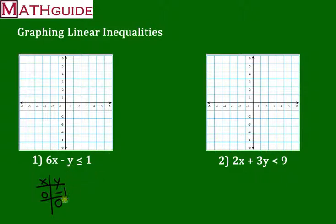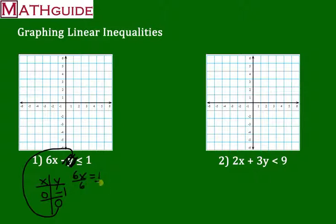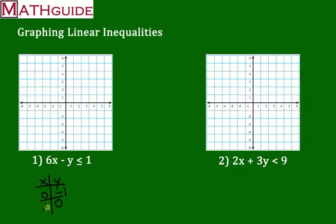Now let's do the same thing but put in zero for y. Picture putting in zero there — six x minus nothing is just six x, so that term disappears. We're left with six x equals one. I'm just ignoring the inequality right now; I want to know what the value is for x. So I divide by six and get one sixth — or about point one seven — a very small value. I'm going to put one sixth into the table right over here.